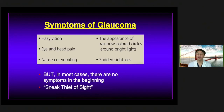However, there are symptoms for very severe glaucoma where the pressure can be very high or you've had severe vision loss. These include hazy vision, eye or head pain if pressure is very elevated, nausea and vomiting, the appearance of rainbow-colored halos around lights, and sudden vision loss as in the case of an acute angle closure attack.